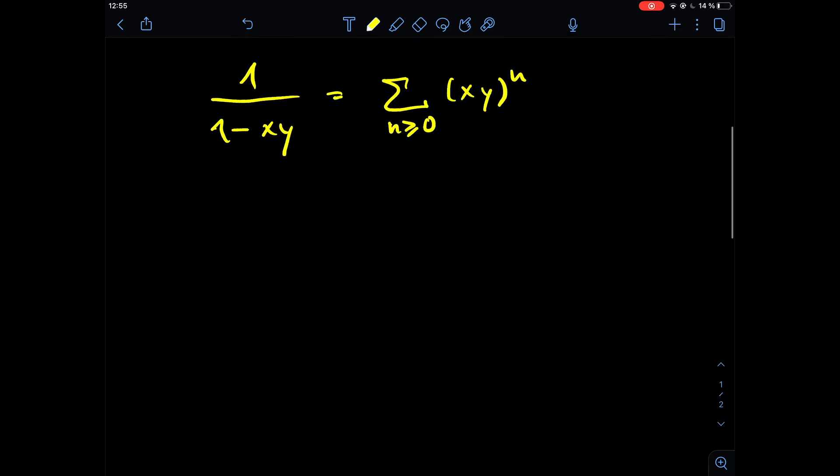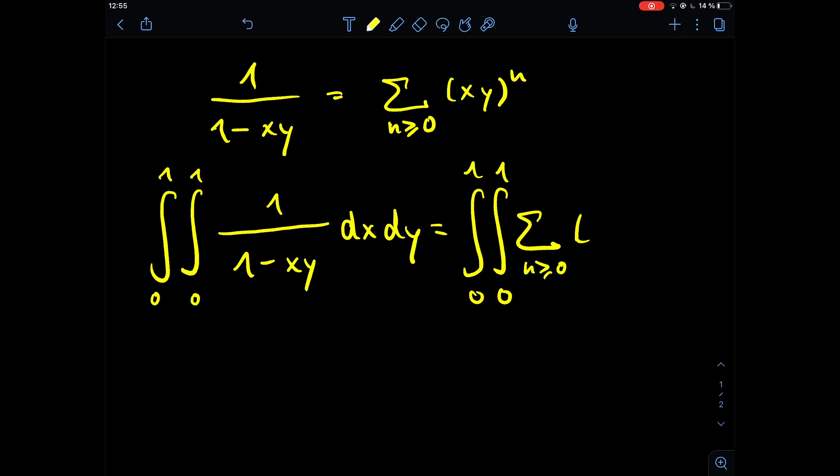So let's plug that into the integral. Write it down: first we have the limits from 0 to 1, 0 to 1, and then 1 divided by 1 minus xy dx dy. Now we plug in the sum. The limits of the integral stay the same, so we have the sum n being greater or equal than 0, xy to the power of n dx dy.